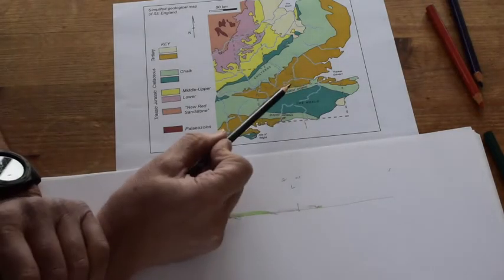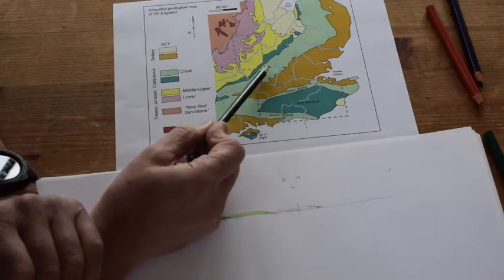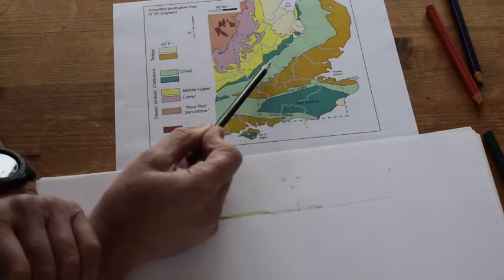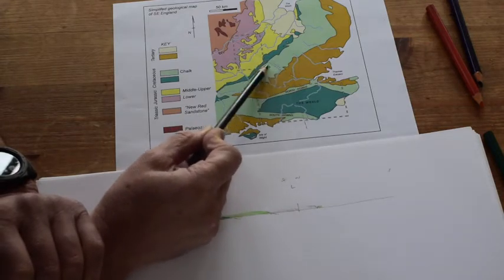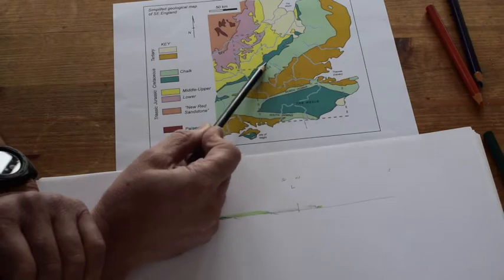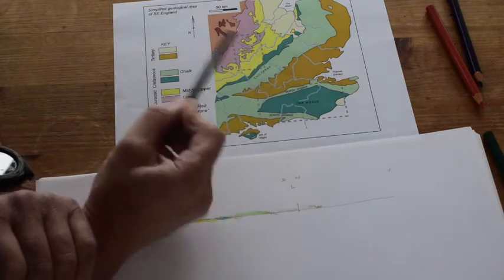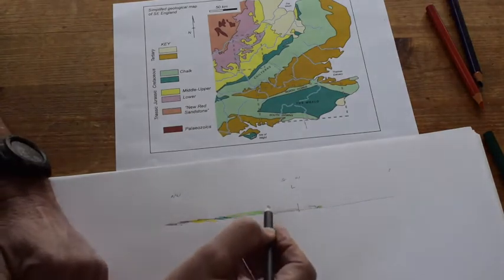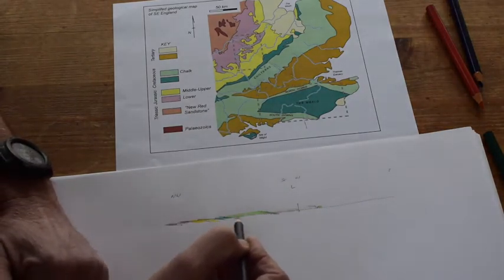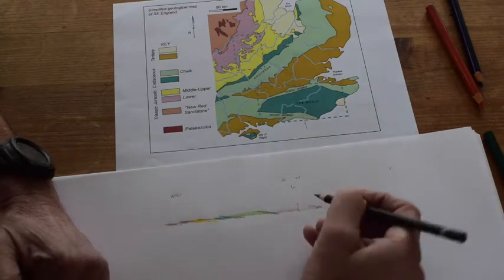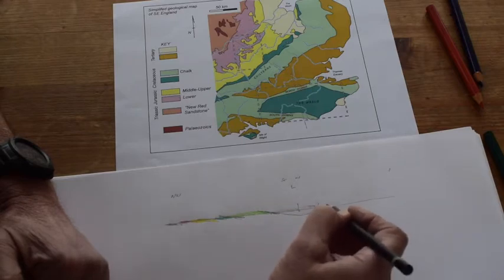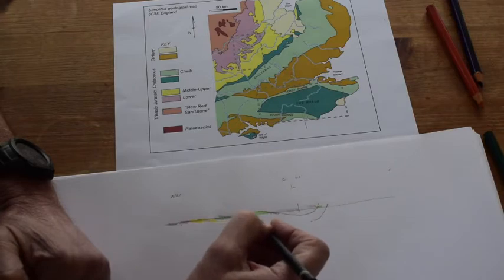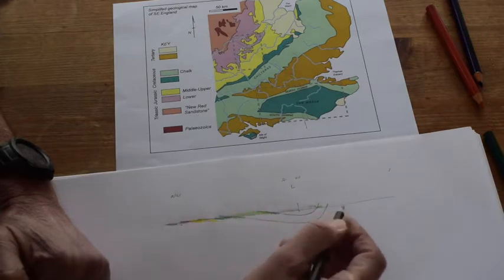Look at the outcrop width of the chalk in the North Downs compared to the Chilterns. In the North Downs it's really narrow; in the Chilterns it's very broad. Now if the chalk has a near constant thickness, it means that in the Chilterns the rocks are dipping very gently compared to the North Downs. So I'm going to adjust my cross section to reflect that and make the chalk in the Chilterns more gently dipping, so that when this boundary comes up as it must do like this in the North Downs, the outcrop width is going to vary from narrow in the North Downs to wide in the Chilterns.